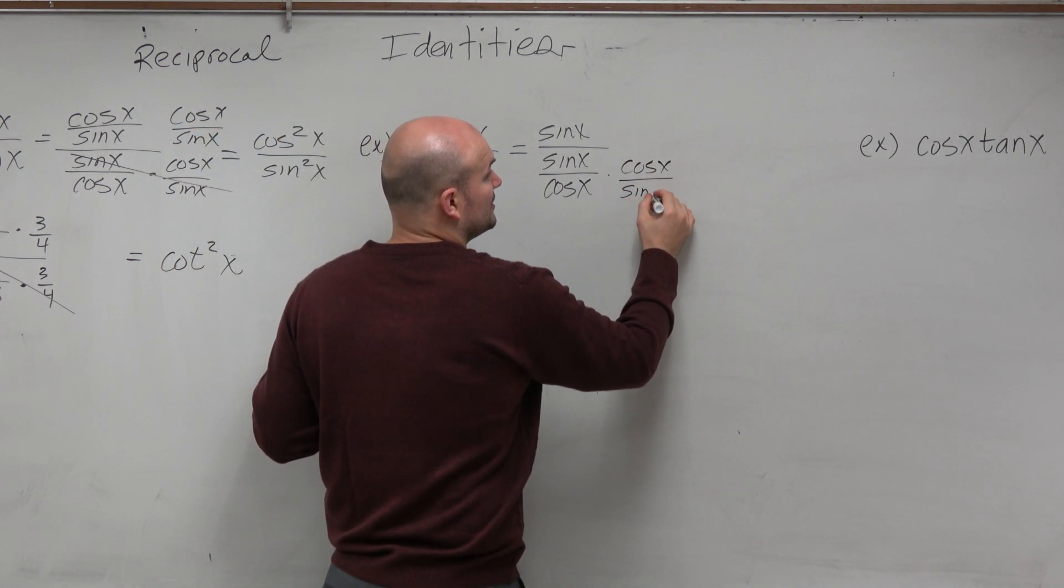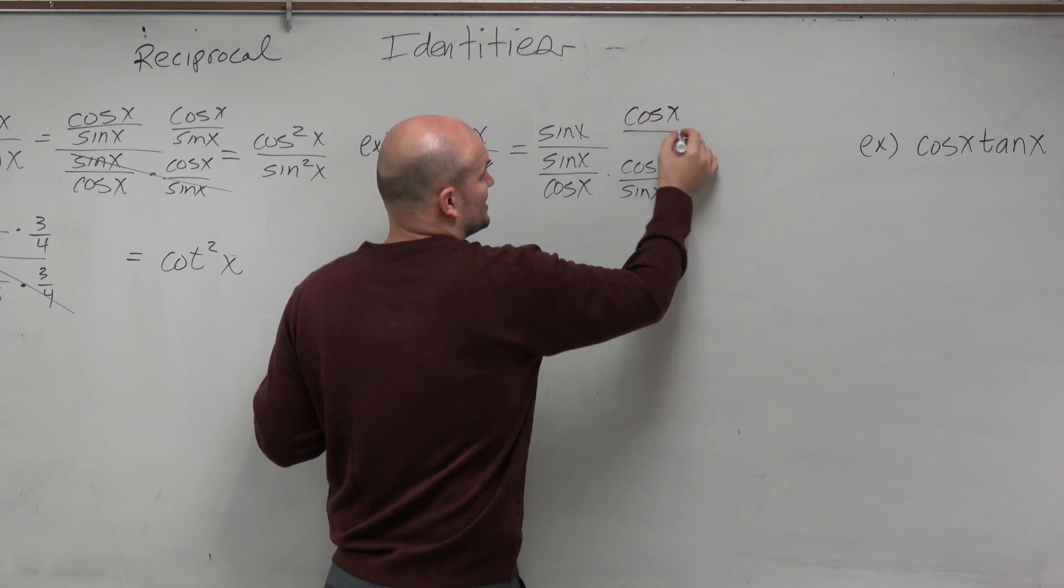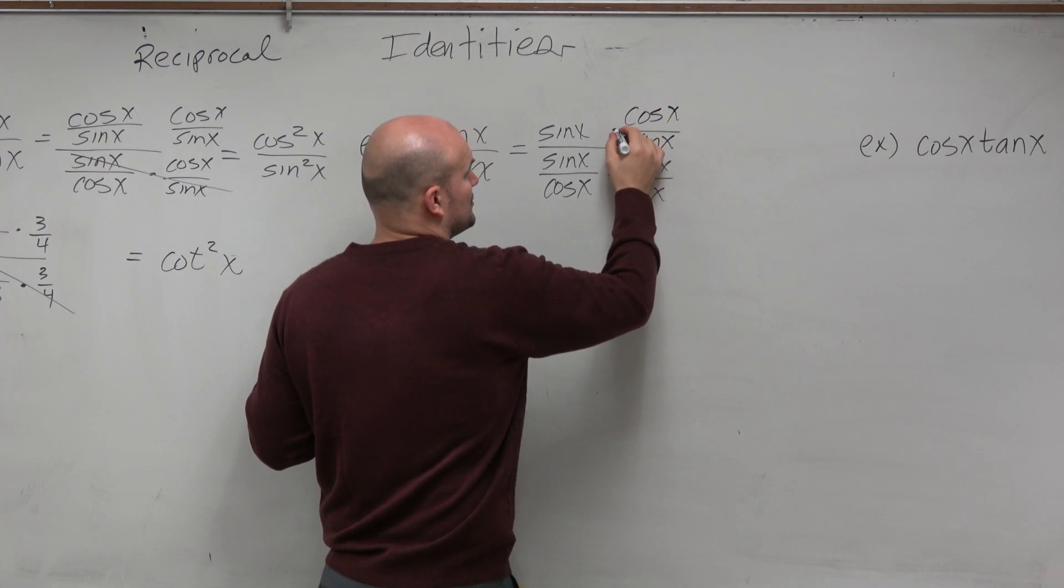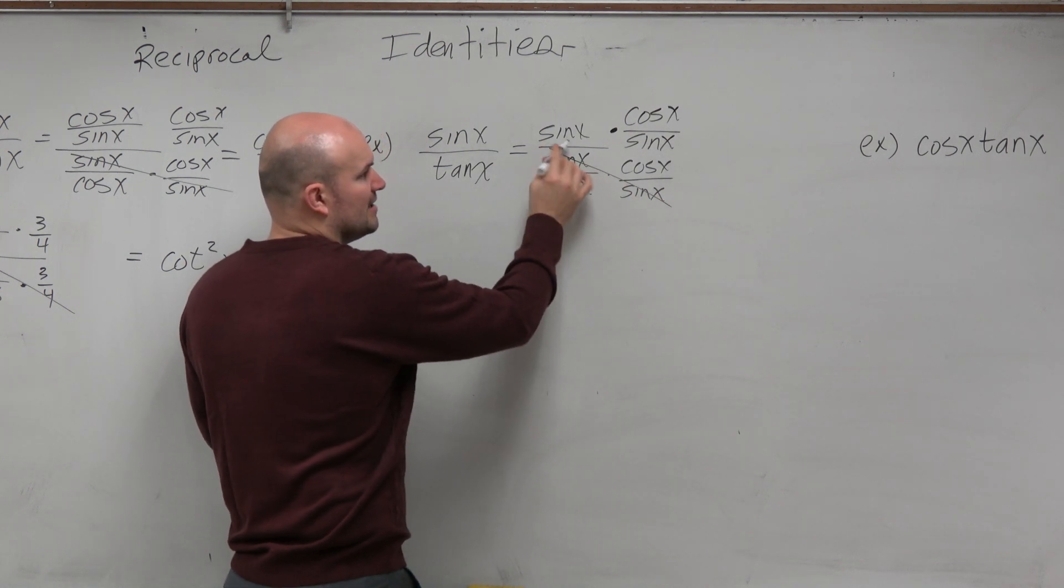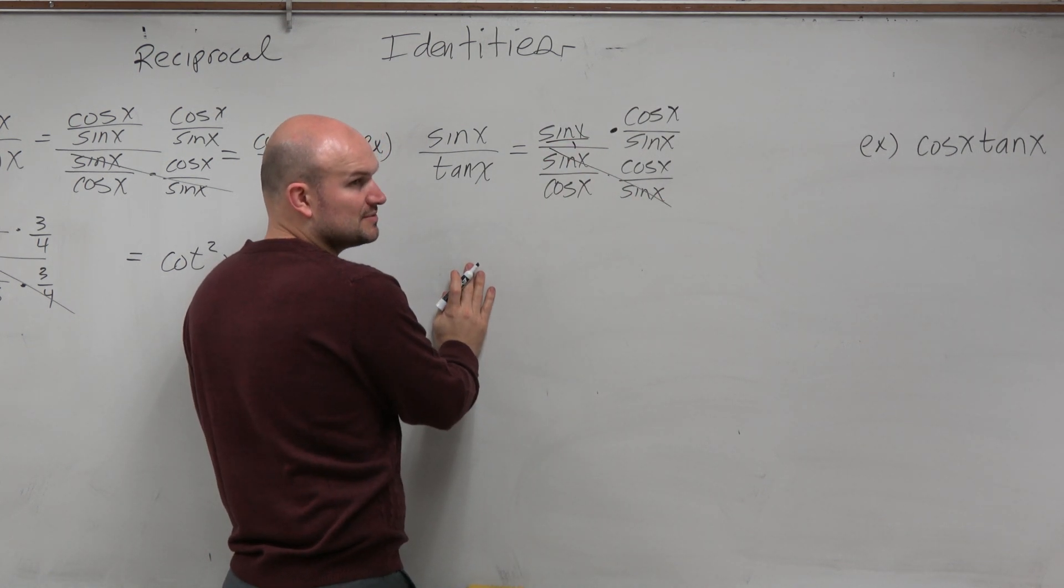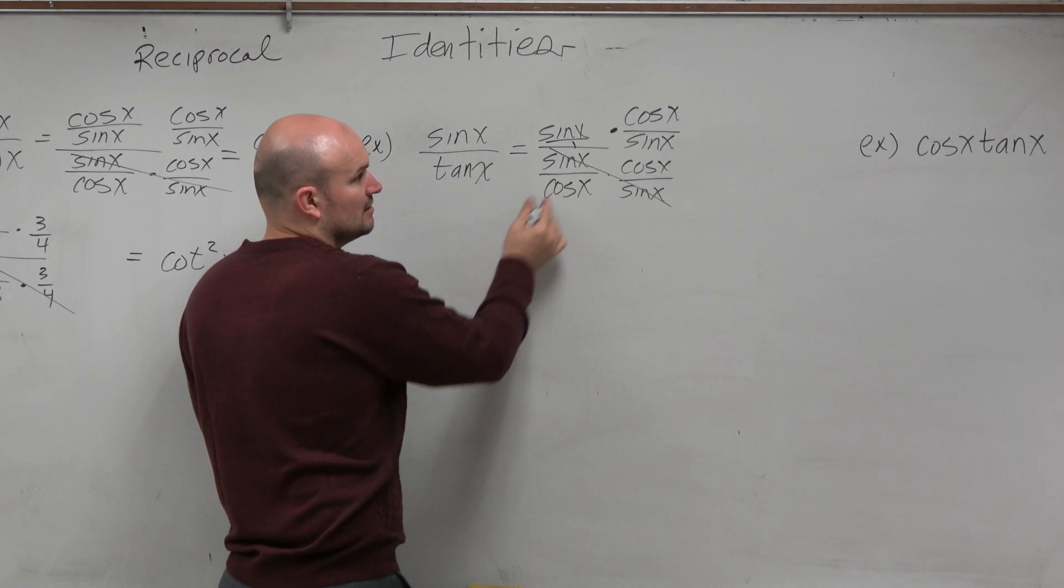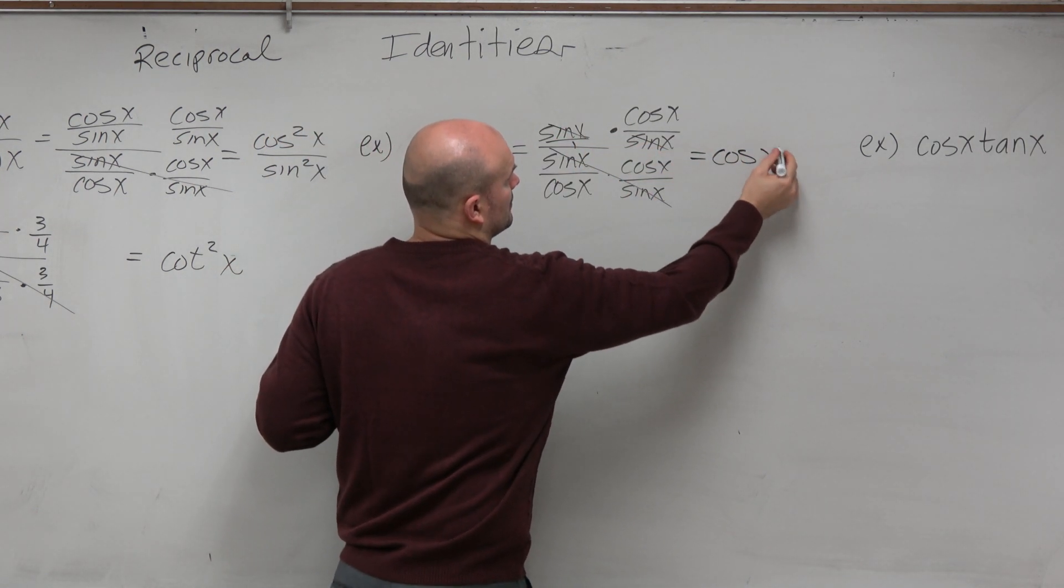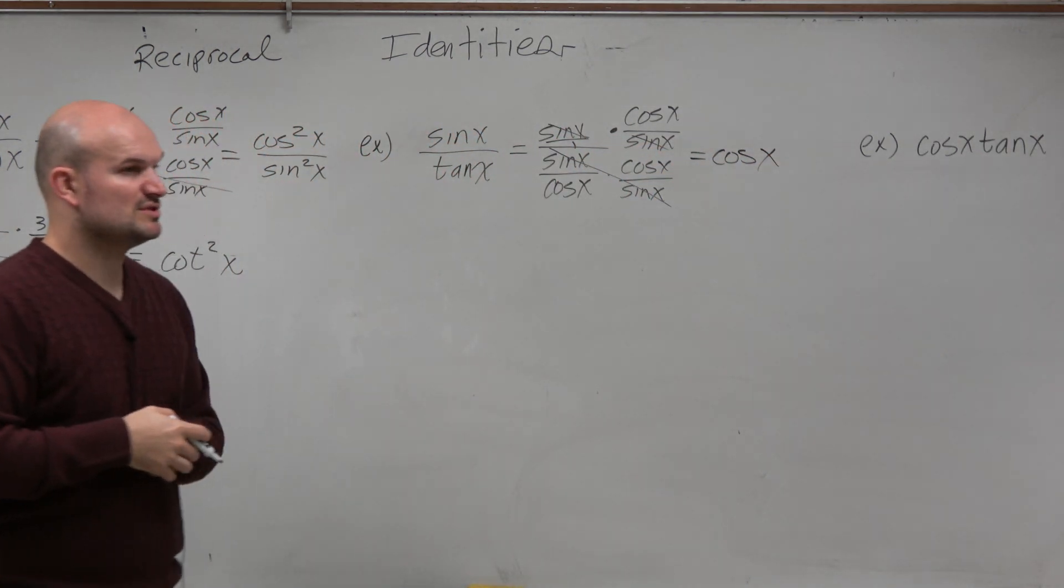Now again, you don't really need to show this work. I'm just showing it so you guys can see mathematically what I'm doing. And then this is really over 1. So what happens with the sines? You're just left with cosine of x.